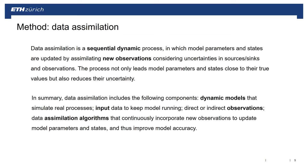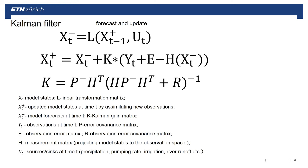Now we come to the definition of data assimilation. It is a sequential dynamic process where the model is updated by assimilating new observations. The whole process includes a dynamic model used to simulate the real aquifer systems, input data to keep the model running forward, observation data to update the numerical model, and data assimilation algorithms to calibrate the model. The common filter — the Kalman filter — uses two steps: first the model forecast, followed by the model update step. x⁻_t represents the forecast model state at time t.